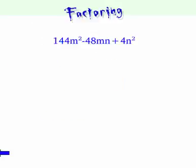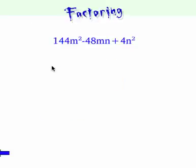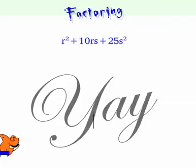So let's try that one out. So what is common? We said 4 was common. Inside, we're left with 36m squared. So let's take the square root of that. That's going to be 6m. That's minus. So minus. And then the square root. When we take away the 4, we're left with n squared. The square root of n squared is just n. All to the power of 2. Yay!